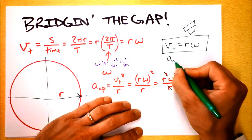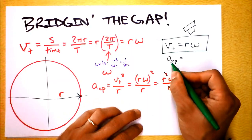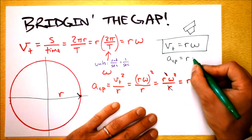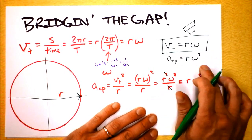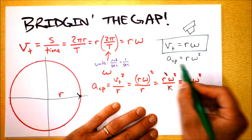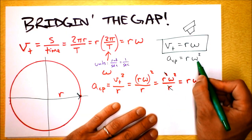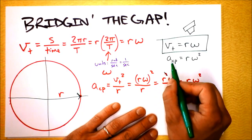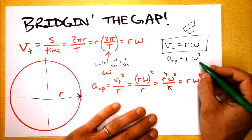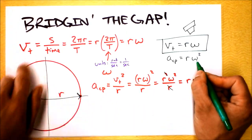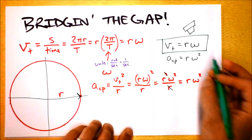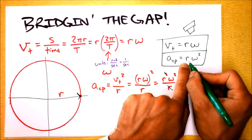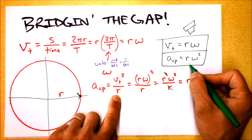Let's put that in a box: linear centripetal acceleration equals rω². This is instantaneous because it depends on an instantaneous value of angular velocity. Note that centripetal acceleration depends on how fast you're going angularly — not on angular acceleration.